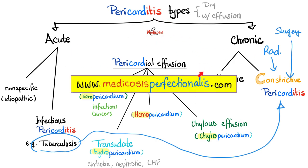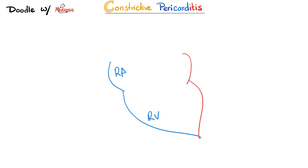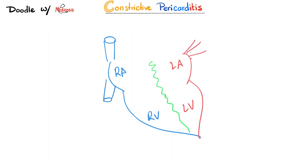If you want to download these colorful notes, go to medicosisperfectionitis.com. If you really want to understand constrictive pericarditis, bring a pen and paper and draw with me. Here is the right side of your heart and the left side — right atrium, right ventricle, left atrium, left ventricle — with the interatrial and interventricular septum, superior vena cava, inferior vena cava, and four pulmonary veins.